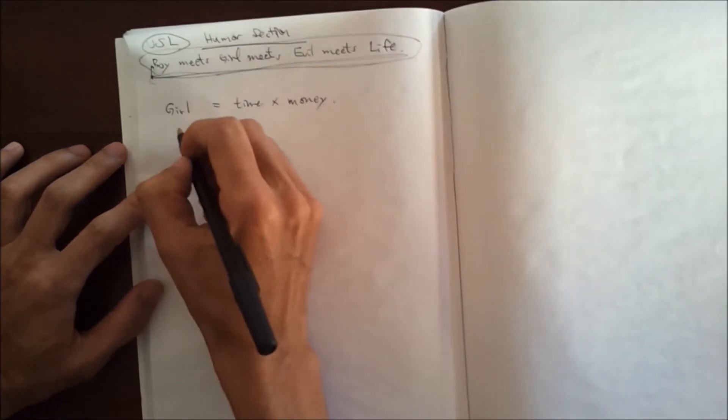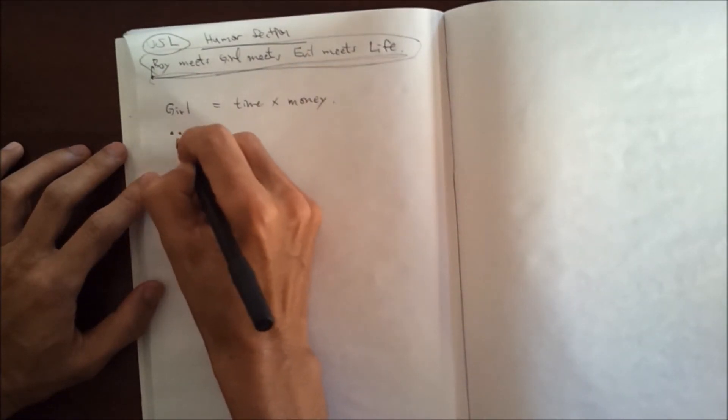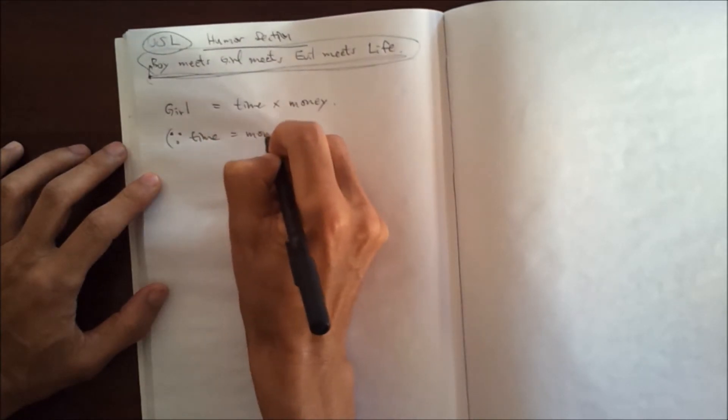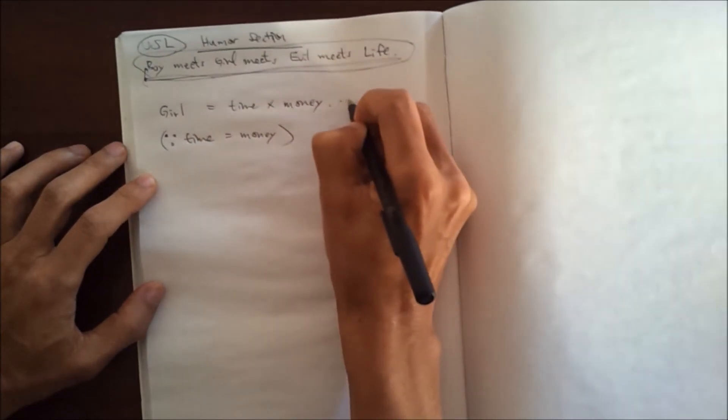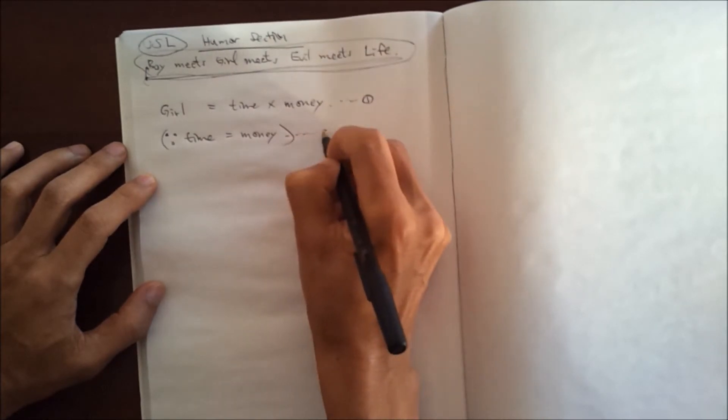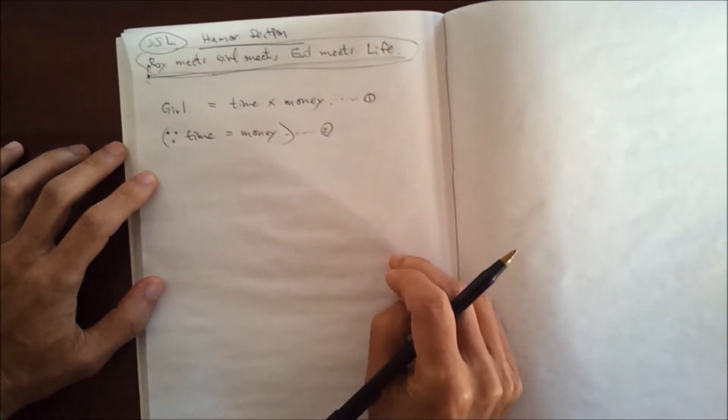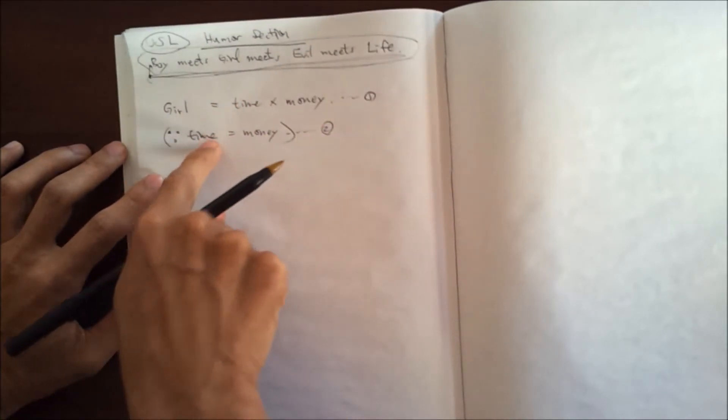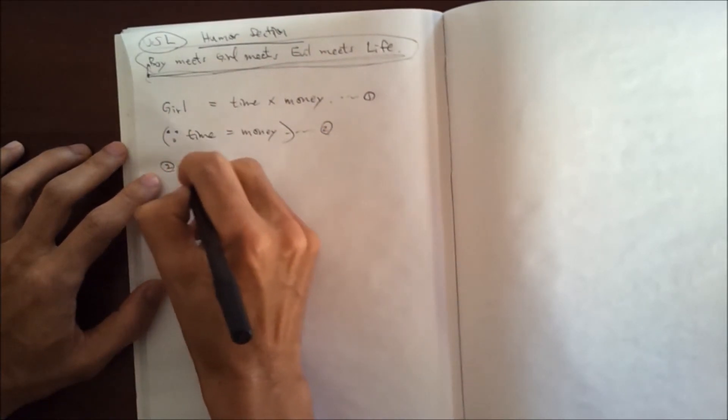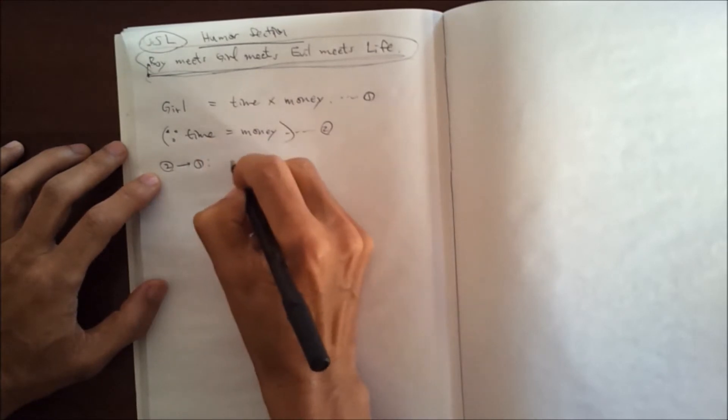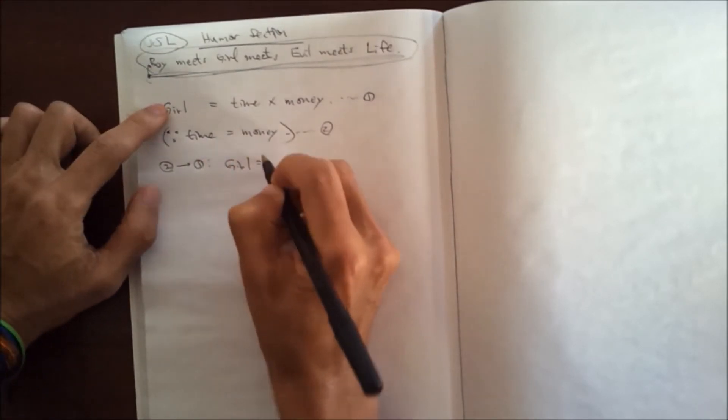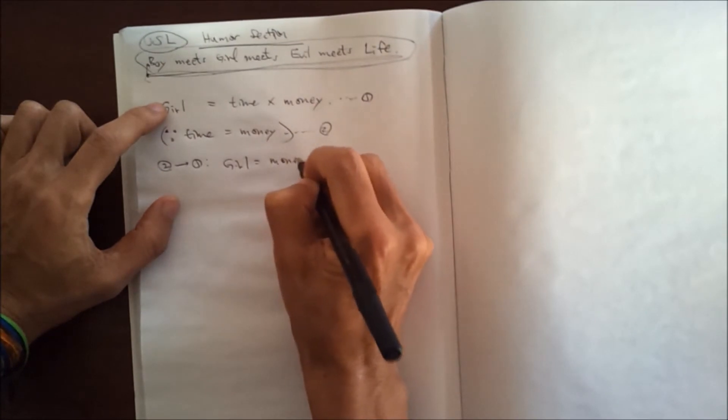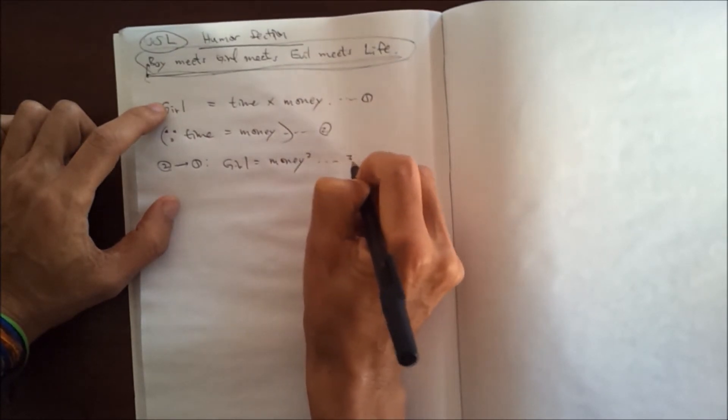And then the next one is something that quite often we use is time is money. So let's call this one equation one. Let's call this one equation two. So if you plug this one into here, if you plug equation two to one, then become girl equals money times money, which is money squared. Let's call it equation three.